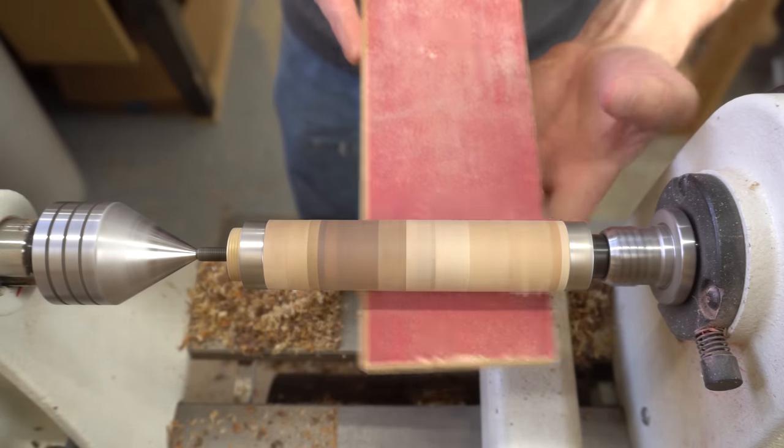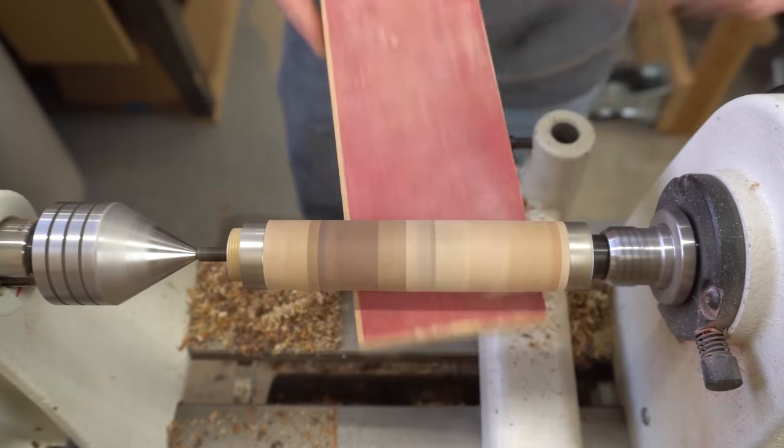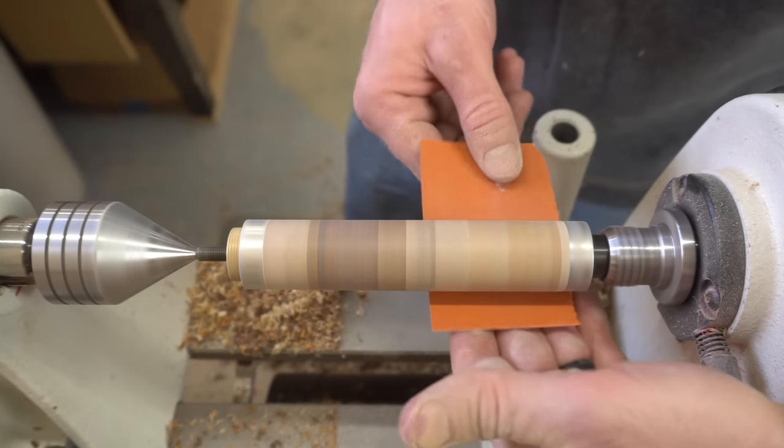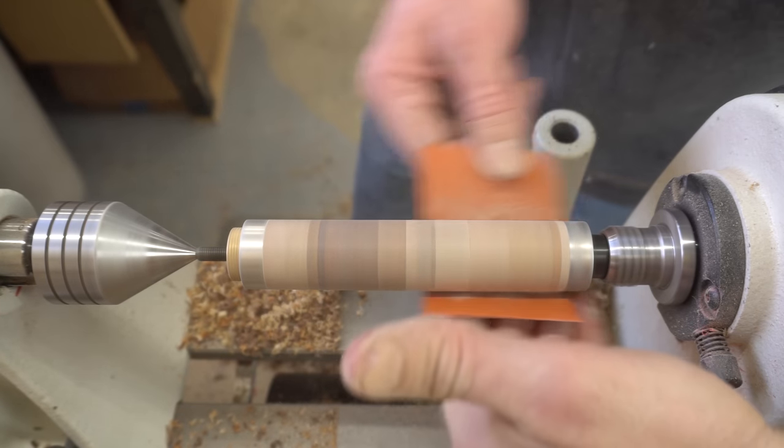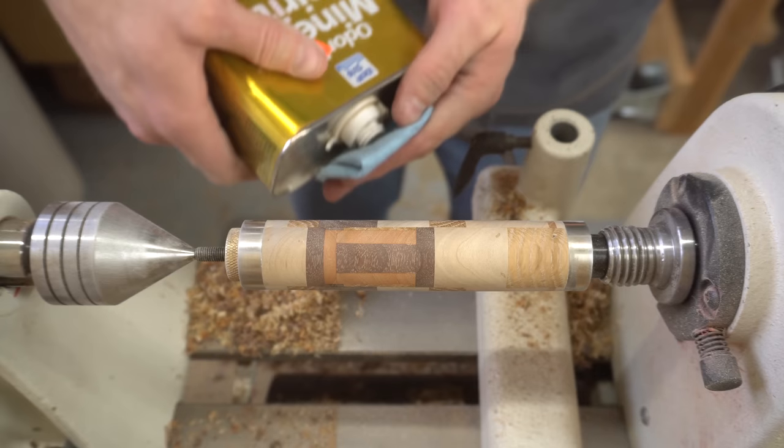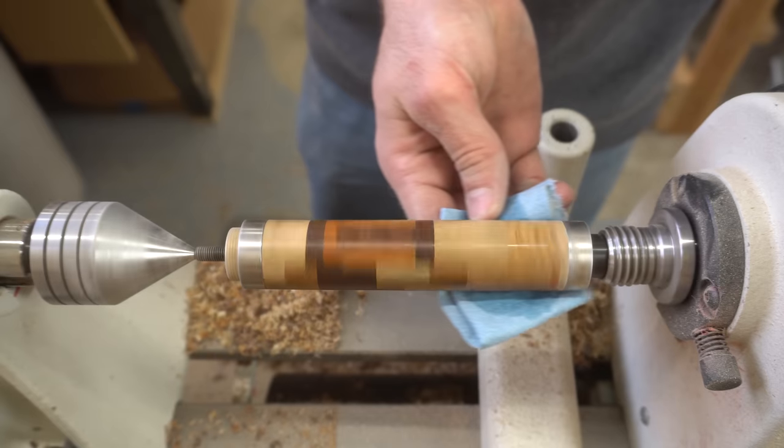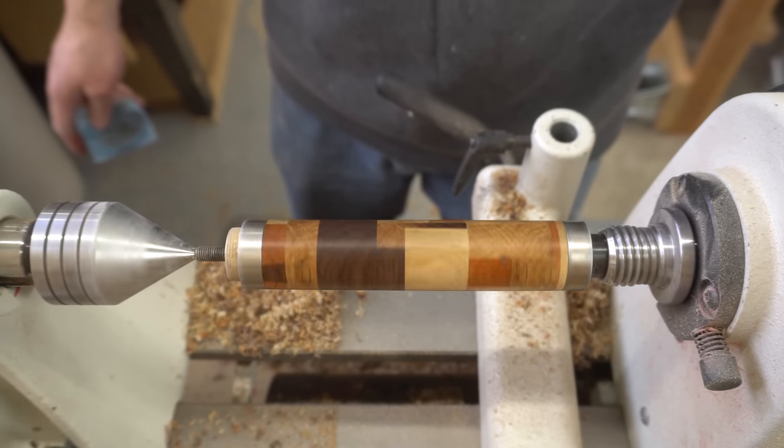On a straight walled project like this, I like to start sanding by using some sandpaper stuck to a flat piece of wood in order to even out the hills and valleys. Then I just progress through the rest of the grits sanding normally. I use a bit of mineral spirits to clean off the blank. This also gives me a really good indication of how the project will look with finish on it.